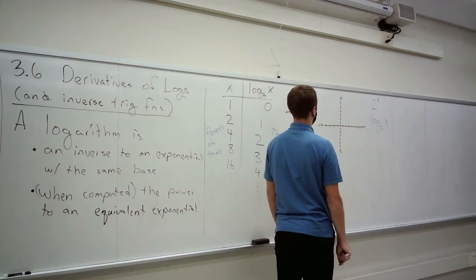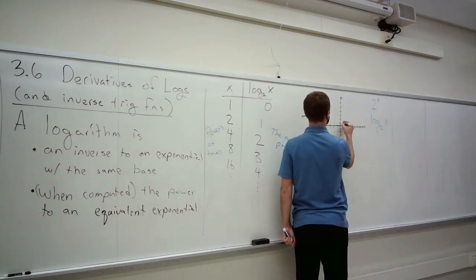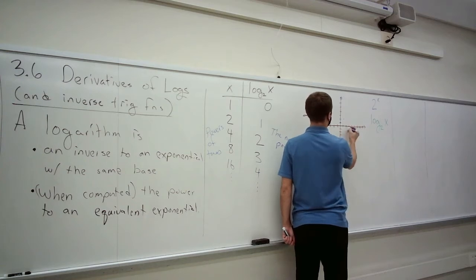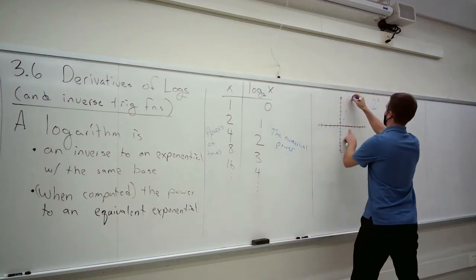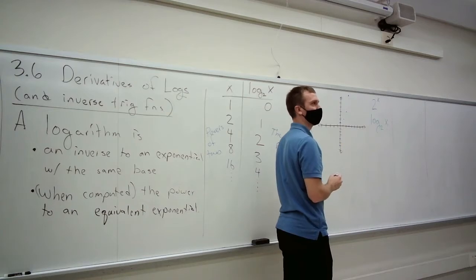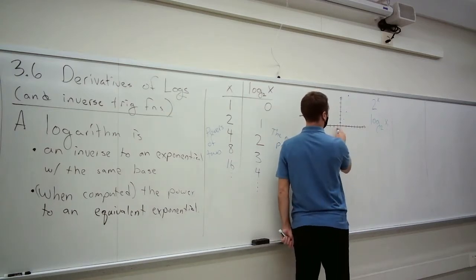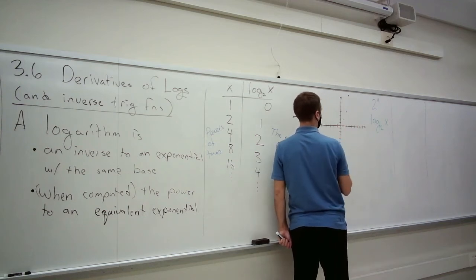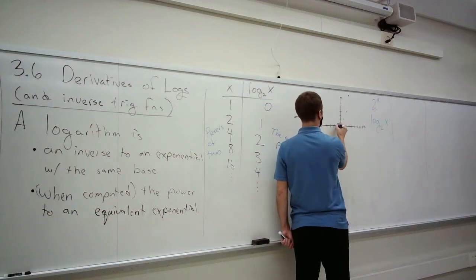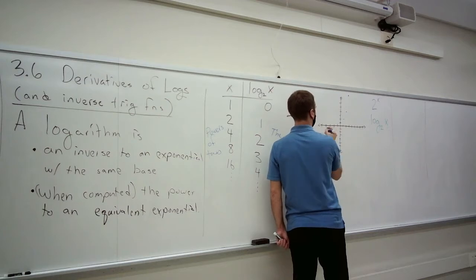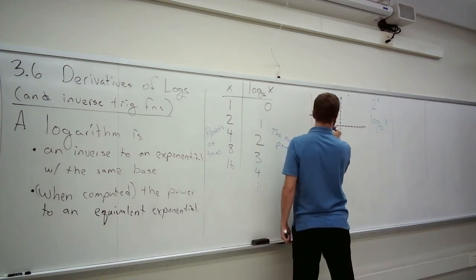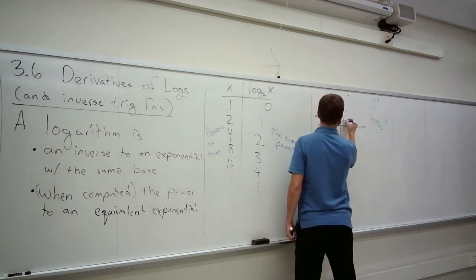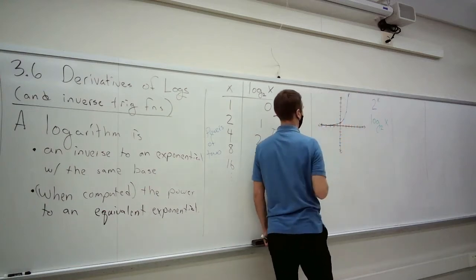First we'll handle 2 to the x. 2 to the zero is 1, 2 to the first is 2, 2 to the second is 4, 2 to the third is 8. It goes up really fast on the right. On the left, 2 to the negative 1 is one-half, 2 to the negative 2 is one-fourth, then one-eighth, one-sixteenth, one-thirty-second. It gets really close to that axis but never crosses. So the exponential 2 to the x has a horizontal asymptote.